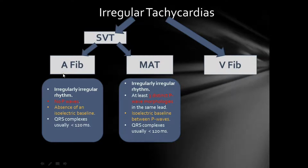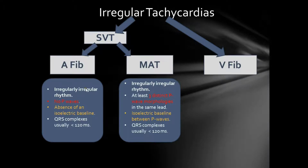Please note that in multifocal atrial tachycardia, you have one P wave per QRS complex. This is unlike atrial fibrillation, where you will have multiple fibrillatory waves per QRS complex. That's because in multifocal atrial tachycardia, the atrial rate is about 100 to 200 beats per minute. Whereas in atrial fibrillation, the atrial rate can reach up to 350 to 600 beats per minute, and since the AV node cannot conduct rates above 200, there will be an AV block with irregular blocking at the AV node.